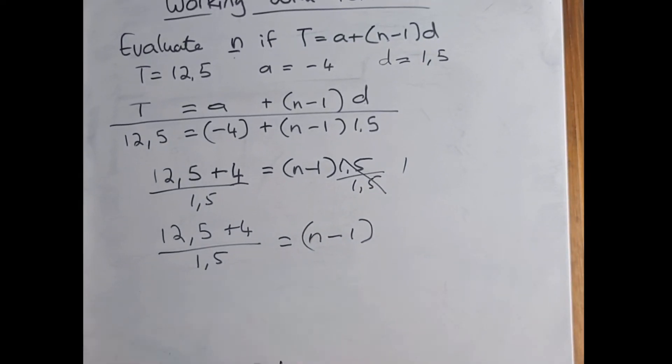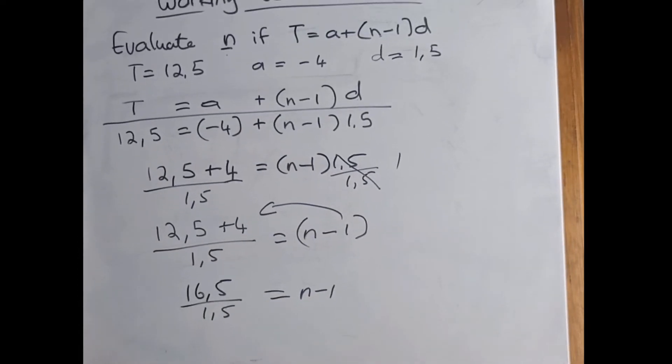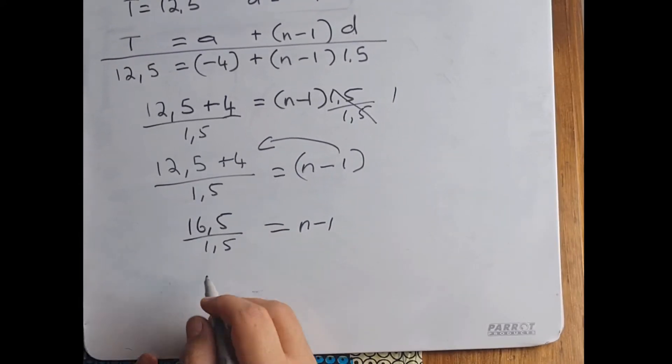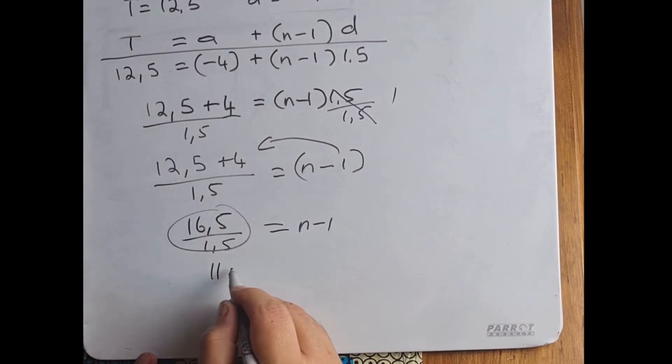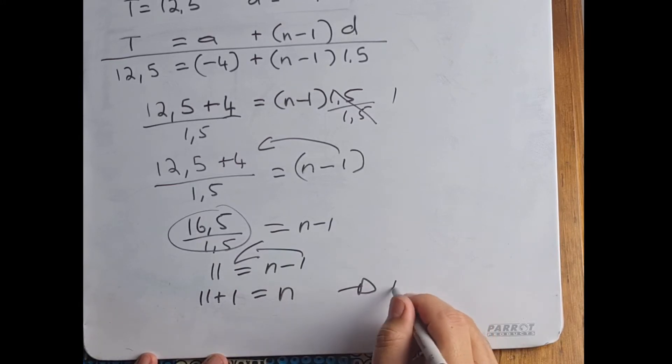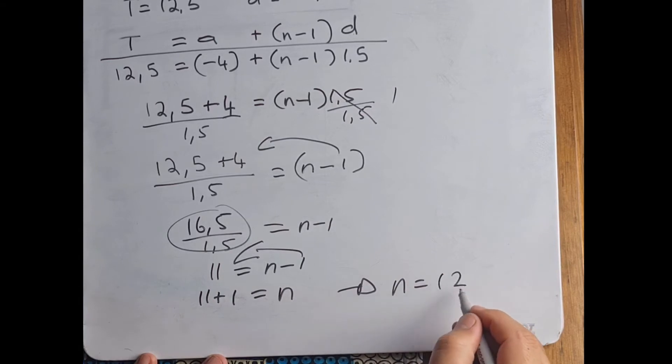I can take this -1 and move it over to this side, it'll then become a positive. So this will be 16.5 / 1.5 = n - 1, and that answer comes to 11. And what are we going to do? We're going to move our -1 over so we're going to have 11 + 1 = n, and therefore n = 12.